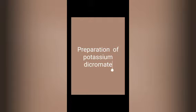The third step is conversion of sodium dichromate into potassium dichromate. Sodium dichromate is more soluble and less stable than potassium dichromate. When a hot saturated solution of sodium dichromate and potassium chloride are mixed in equimolar proportions, orange crystals of potassium dichromate are obtained on cooling.